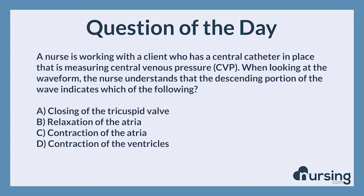Relaxation of the atria. Central venous pressure, CVP, is measured within the superior vena cava and shows the pressure with which blood is returned to the superior vena cava and right atrium. Systole and diastole produce a waveform on the monitor that the nurse should check to ensure CVP is being measured appropriately. The phases represented on the waveform show end diastole, early, mid, and late systole, and early diastole, labeled A, C, V, X, and Y.